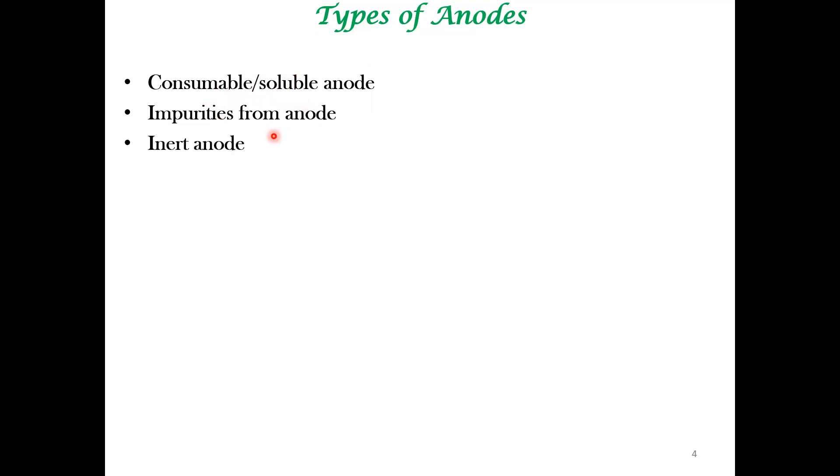Sometimes, you can also use an inert anode for electrodeposition. In this case, the typical electrochemical reaction that is occurring at the anode is oxygen evolution.